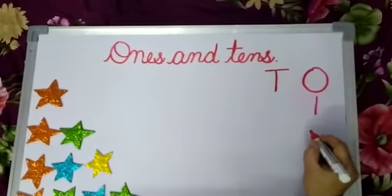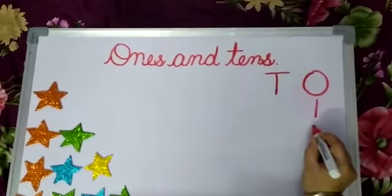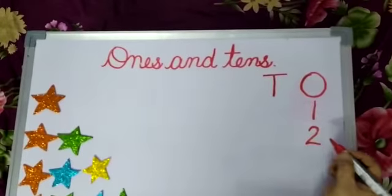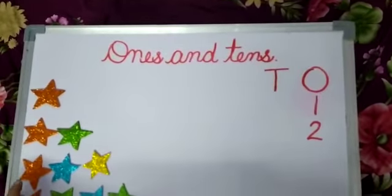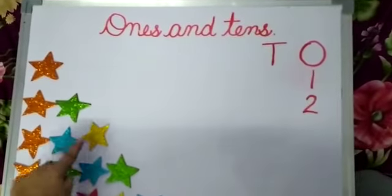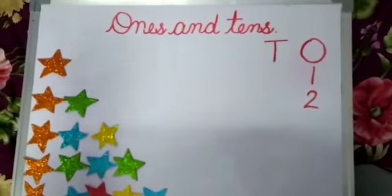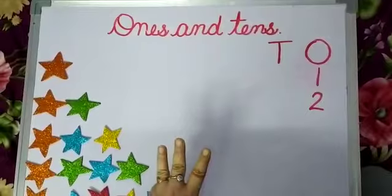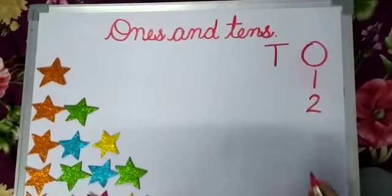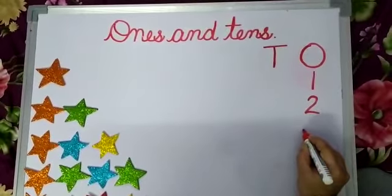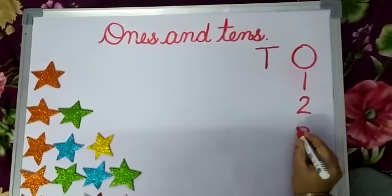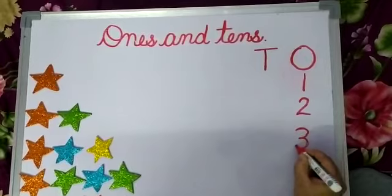So I will write 2 in the 1's column. Now I will count: 1, 2, 3. So now I have 3 1's. So I will write 3 in the 1's column.